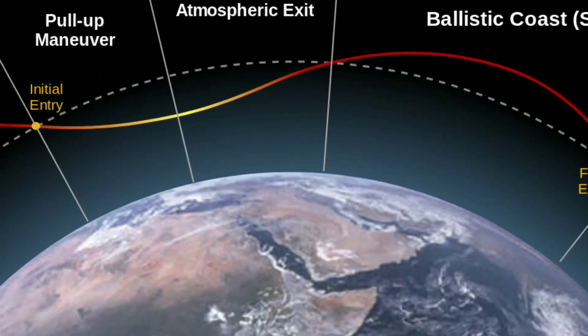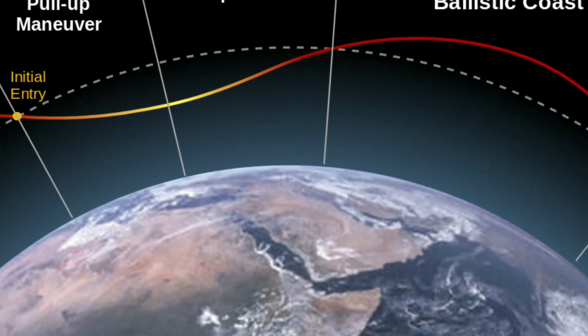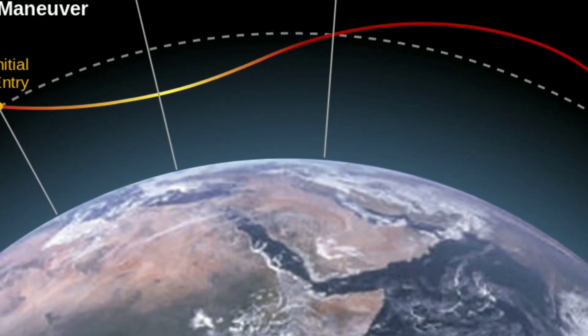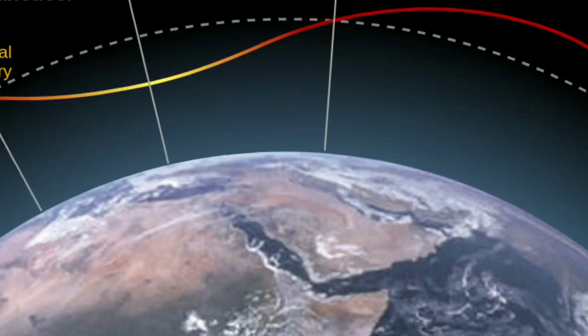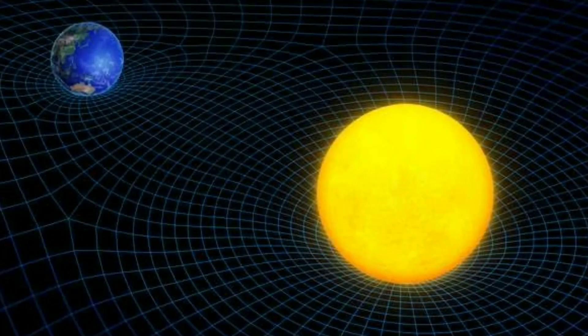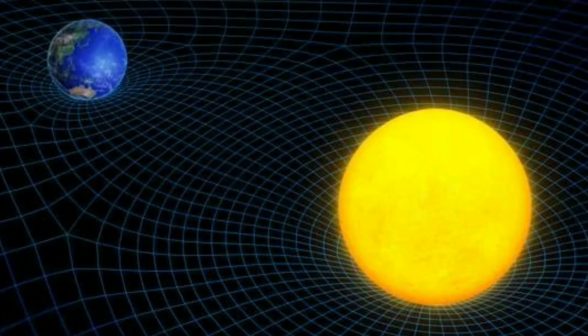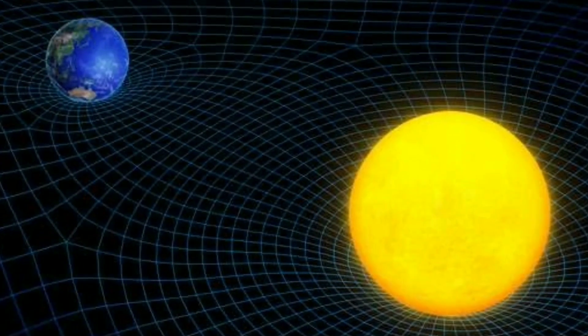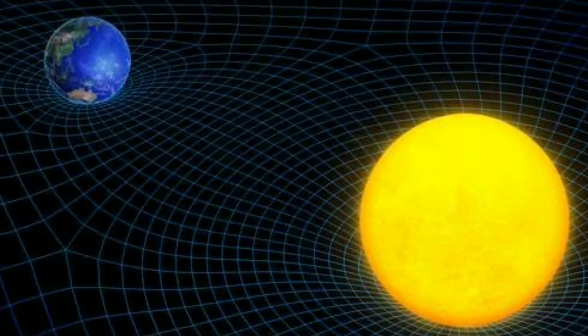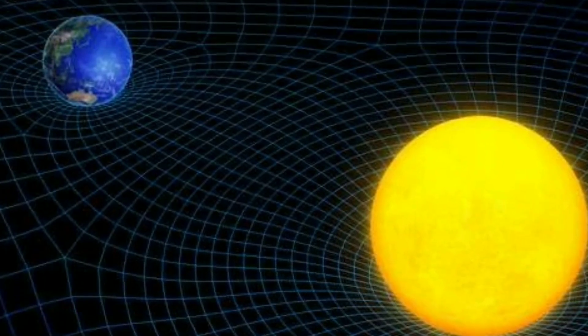For example, we are not attracted towards the Earth because it is pulling us with a force called gravity. We are attracted towards it because we are trapped inside the curvature of space-time caused by the mass of the Earth. The Earth is trapped inside the curvature of space-time created by the Sun, and so on. This is the theory of gravity proposed by Albert Einstein.